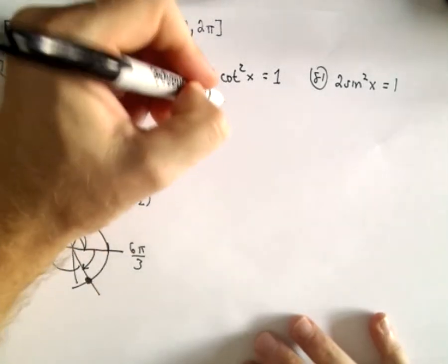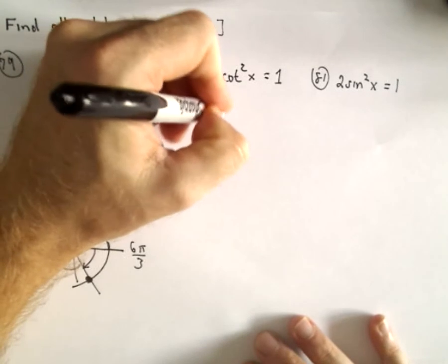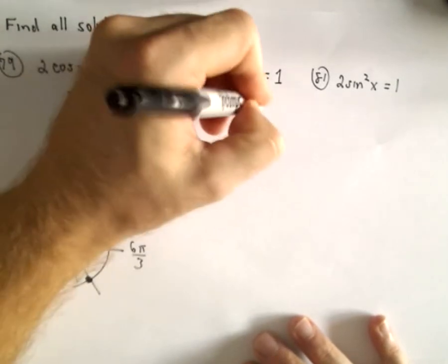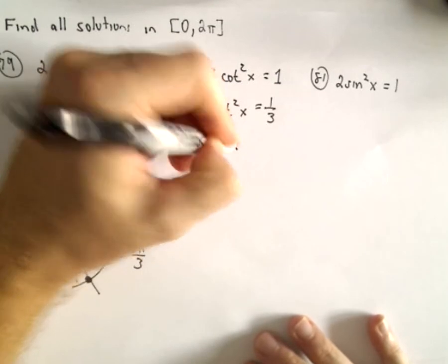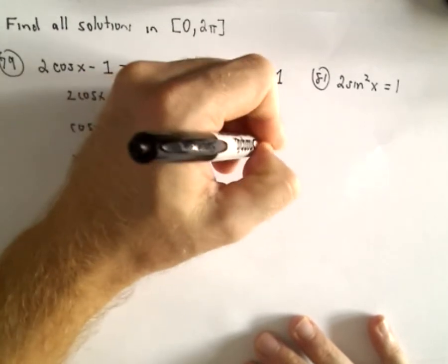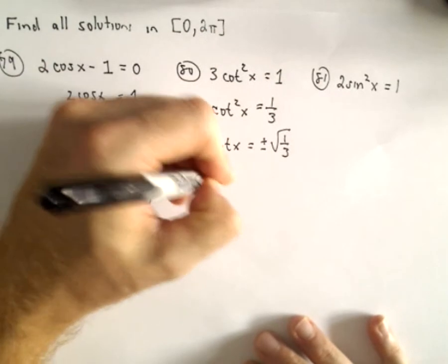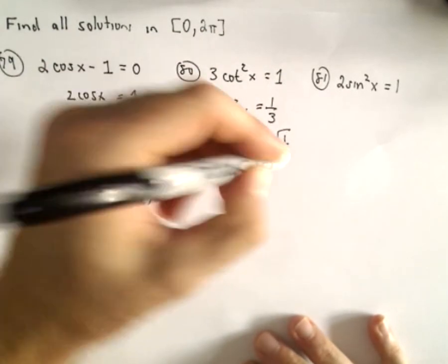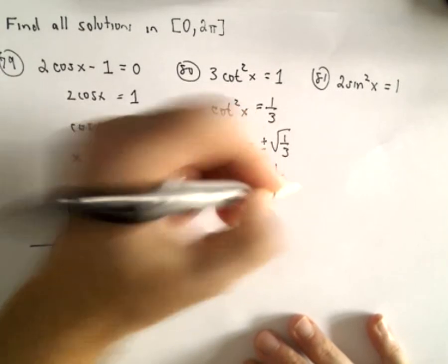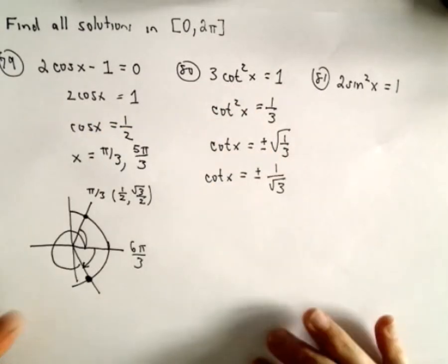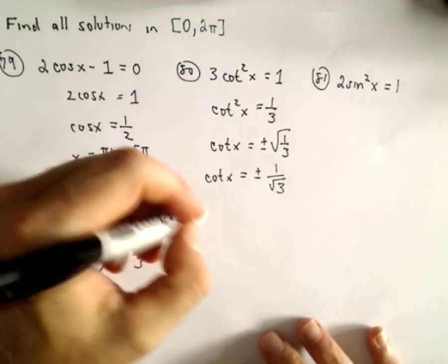For number 80, we have 3 cotangent squared x equals 1. I'm going to divide both sides by 3, then take the square root, giving us cotangent of x equals plus or minus the square root of 1/3. We can simplify that: the square root of the numerator is 1, and the square root of the denominator is square root of 3. You could rationalize the denominator, but I'm not going to.